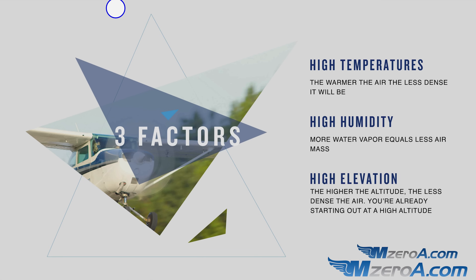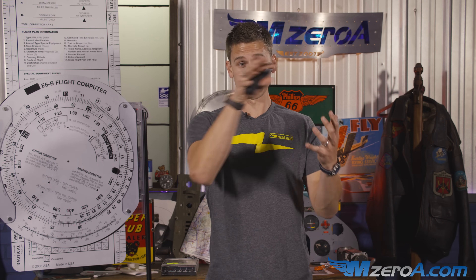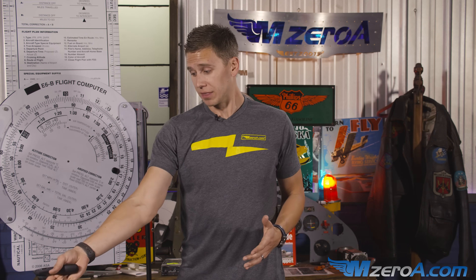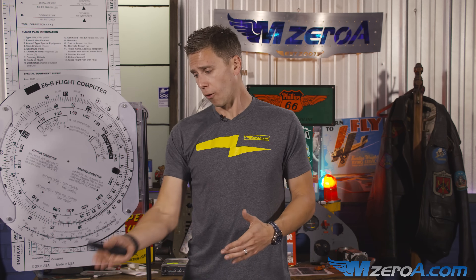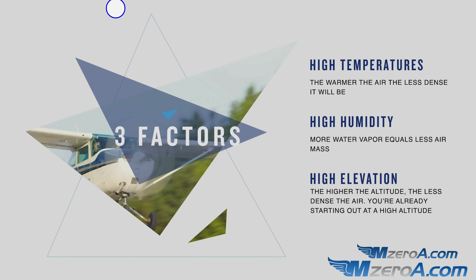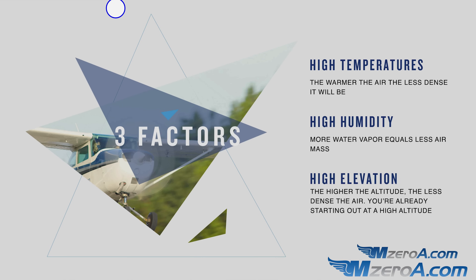The three factors are: high temps, high humidity — more water vapor equals less air mass, because water vapor attaches to the oxygen molecules — and lastly, high elevation. The higher the altitude, the less dense the air. So high temps, high humidity, and high elevation all add to an increase in density altitude.